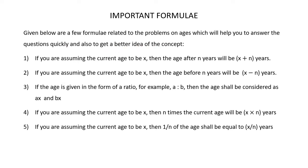Before we begin, please subscribe to our channel. If you are assuming the current age to be x, then the age after n years will be x plus n years. Supposing you are assuming the current age to be 20 years, then the age after 5 years will be 25 years, which is nothing but 20 plus 5 years.